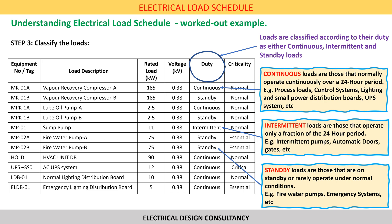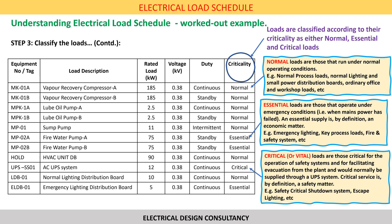Next we need to classify each load according to their duty as either continuous, intermittent or standby. Continuous loads are those that normally operate continuously over a 24-hour period; examples include process loads, control systems, lighting, small power distribution boards and UPS systems. Intermittent loads are those that operate for only a fraction of the 24-hour period; examples include intermittent pumps, automatic doors and gates. Standby loads are those that are on standby or rarely operate under normal conditions, like fire water pumps and emergency systems.